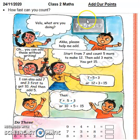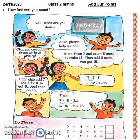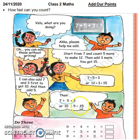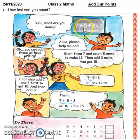इस बच्चे ने बिल्कुल ठीक कहा — हम पहले 7 और 3 को add कर सकते हैं और 5 को बाद में लें। तो 7 plus 3 — 7 के बाद count on करते हैं: 8, 9, 10 — तो 7 में 3 count on किया तो 10 आया। यहाँ 10 लिख दिया, और plus 5 रह गया। 10 के आगे 5 count on करते हैं: 11, 12, 13, 14, 15।